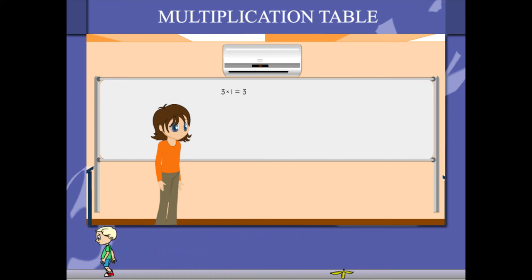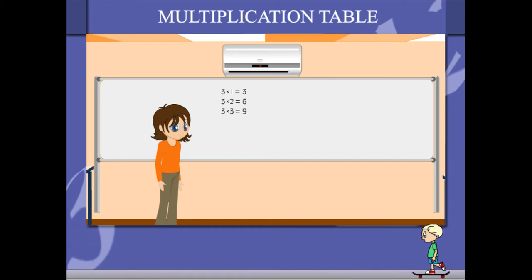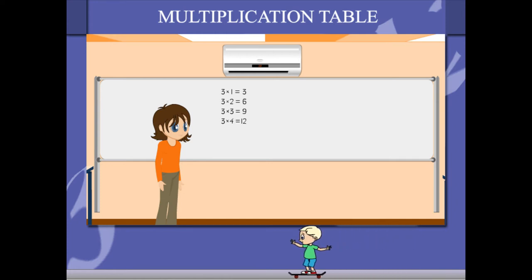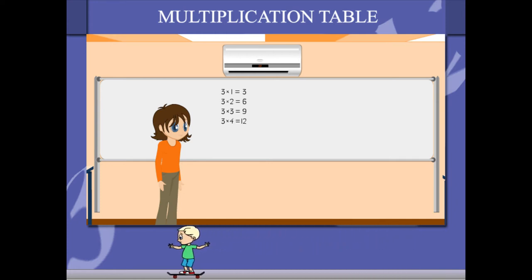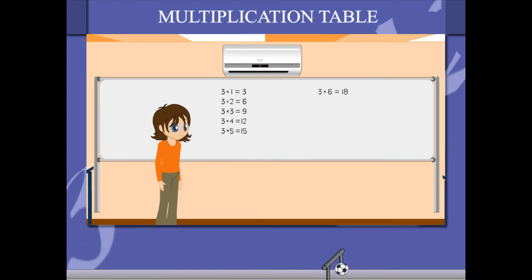3 1's are 3, 3 2's are 6, 3 3's are 9, 3 4's are 12, 3 5's are 15,